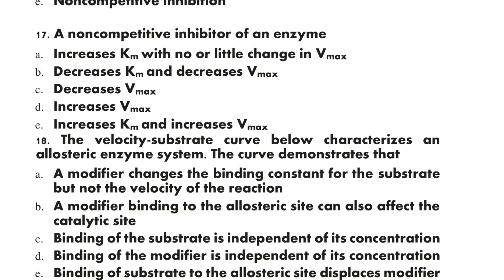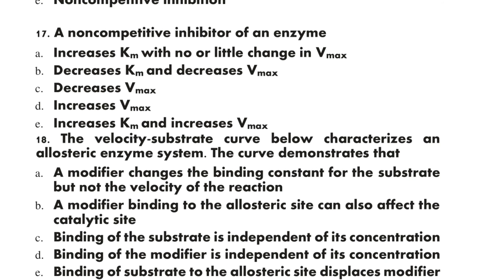Question 17: An unknown competitive inhibitor of an enzyme would: A) increase Km with no or little change in Vmax, B) decrease Km and decrease Vmax, C) decrease Vmax, D) decrease Vmax, E) increase Km and decrease Vmax. The correct option is C: decreases Vmax.